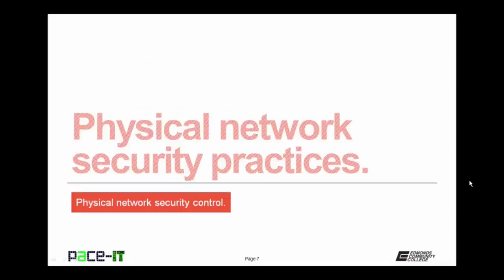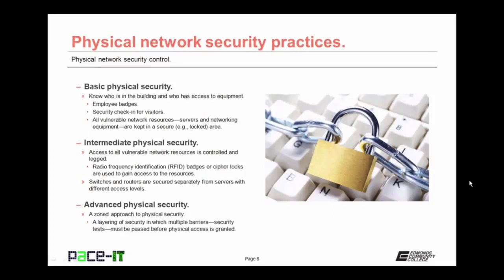Let's move on to physical network security practices. Basic physical security should include knowing who's in the building and who has access to equipment — through employee badges and security check-in for all visitors. All vulnerable network resources such as servers and networking equipment should be kept in a secure area. Then there's intermediate physical security — access to all vulnerable network resources is controlled and logged. You can use RFID badges or cipher locks to gain access. Another step is the separation of resources, with switches and routers secured separately from servers with different access levels.